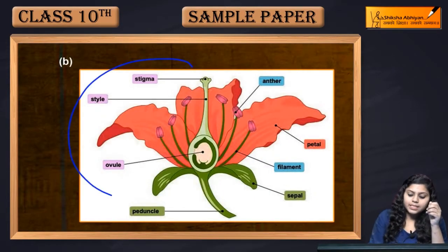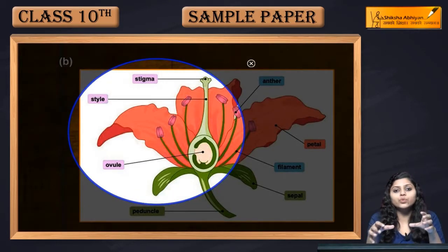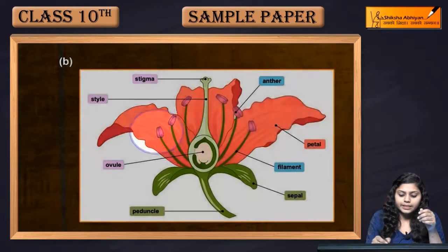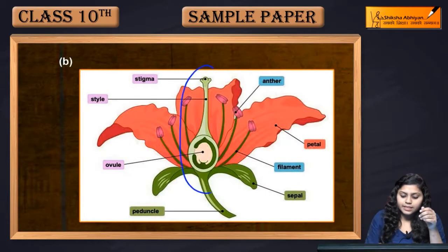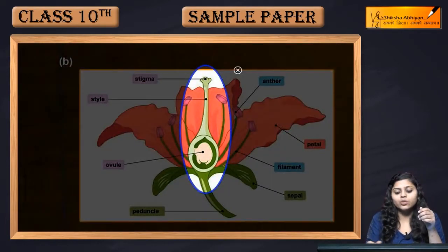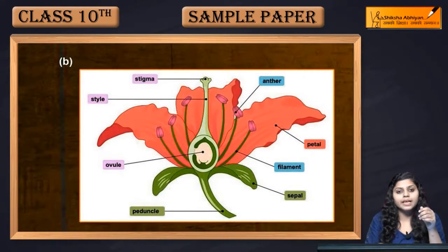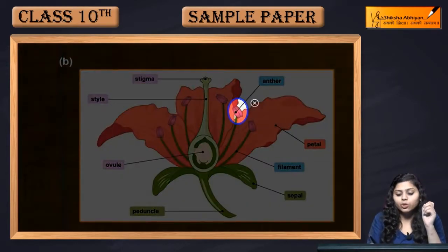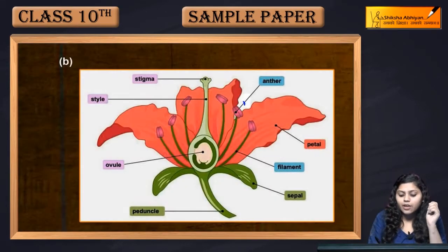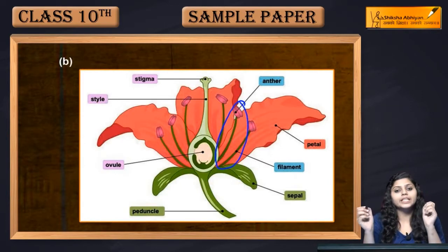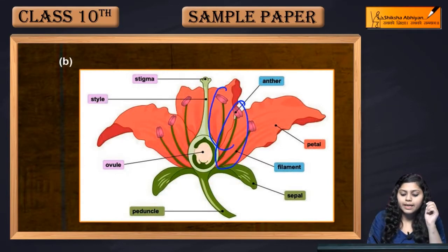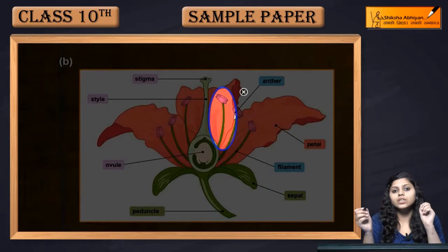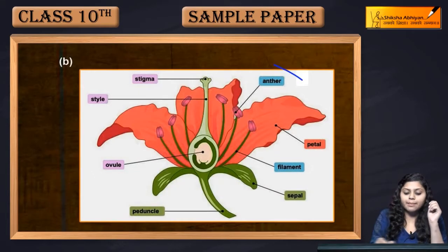Next is stigma, style, ovary — aur ovary mein kya hota hai? Ovule — yeh form karta hai female reproductive part of the flower. This is stigma, style, and ovary. Male reproductive part — anther — jo ki bilobed structure hai with a filament. Filament aur anther milke male reproductive part of the flower form karte hain.